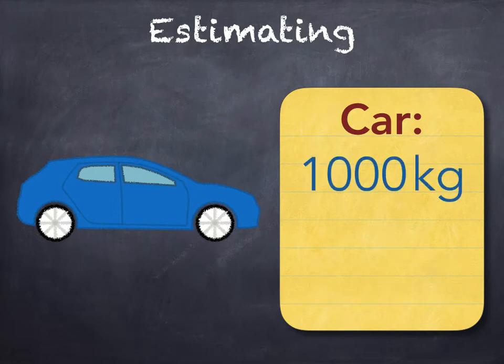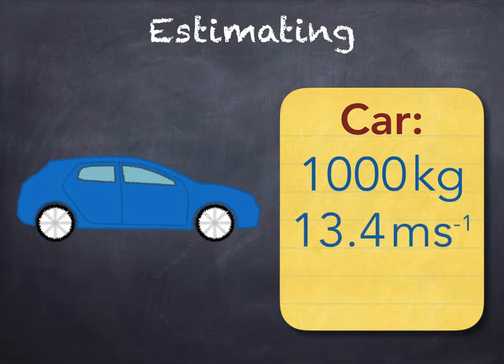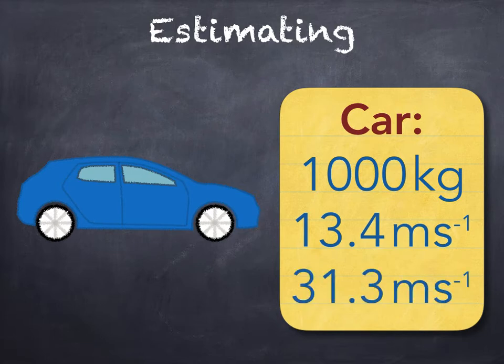How about its speed around town or on the motorway? You maybe know the speed limits in miles per hour, but to calculate kinetic energy you need speed in meters per second. A speed of 30 miles per hour works out to be 13.4 meters per second, and a maximum speed of 70 miles per hour on the motorway is 31.3 meters per second.